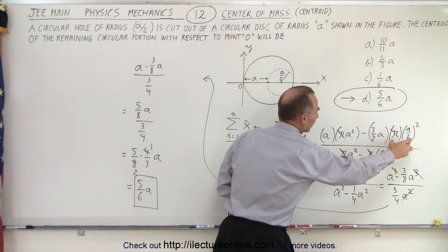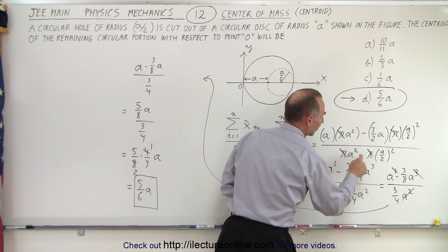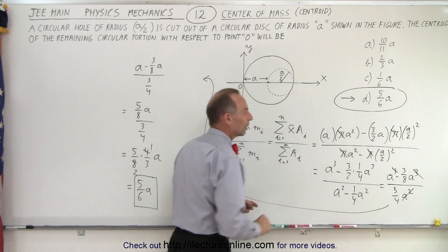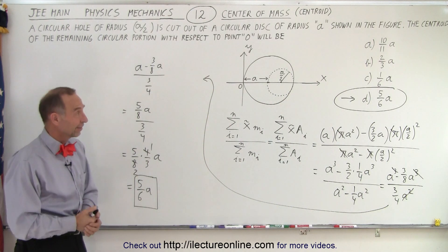So we multiply that times the area of the hole, area of the disk. Here's the area of the disk, area of the hole, and then simply simplify that until you get the answer. And that is how it's done.